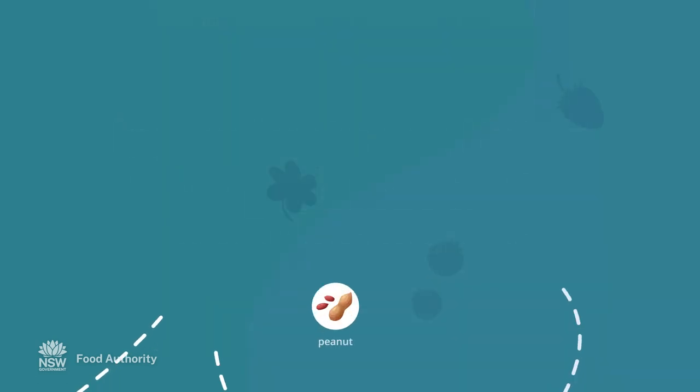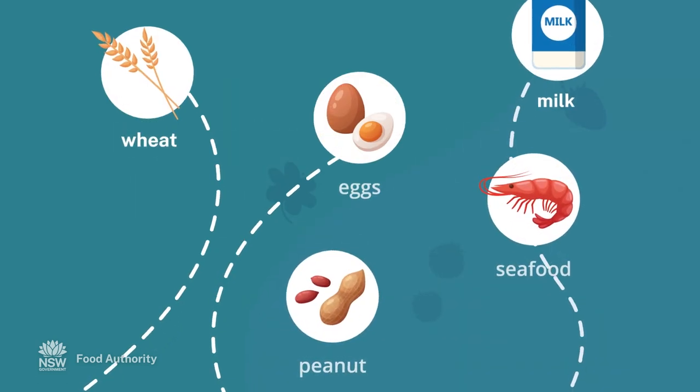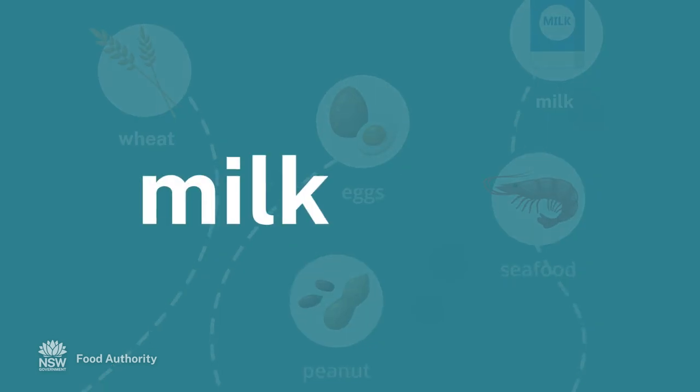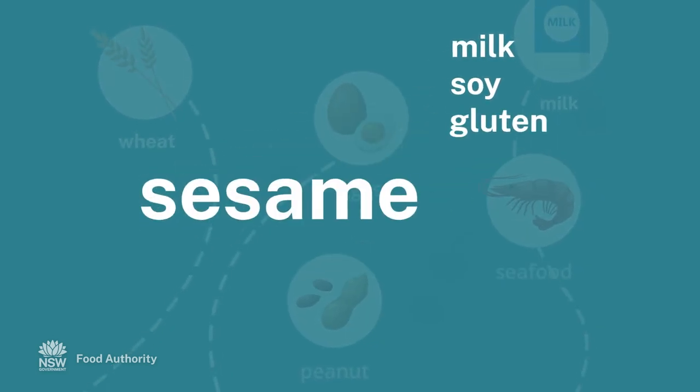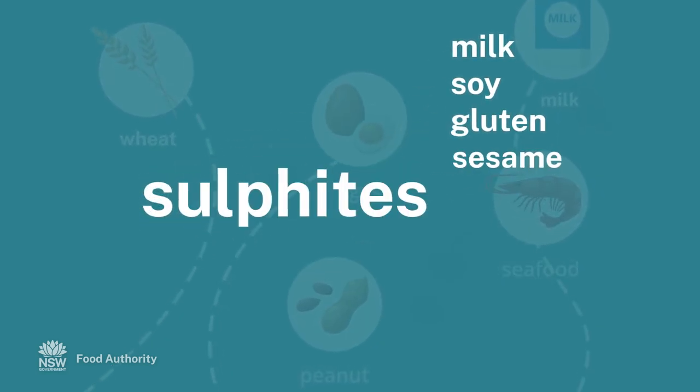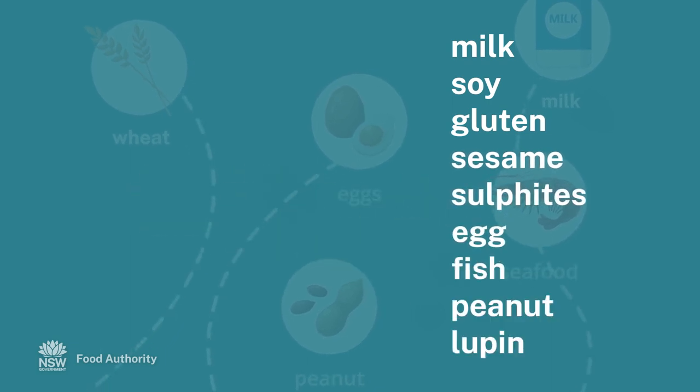Some food allergens must always be declared. The list includes milk, soy, gluten, sesame, sulphites, egg, fish, peanut and lupin.